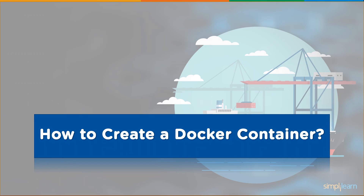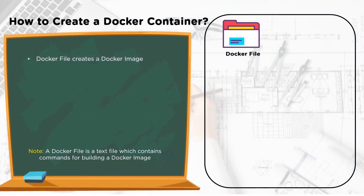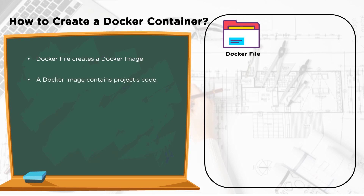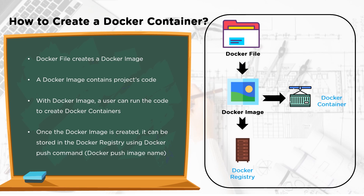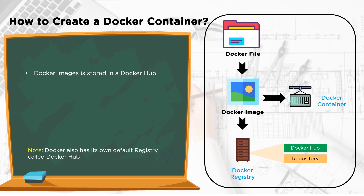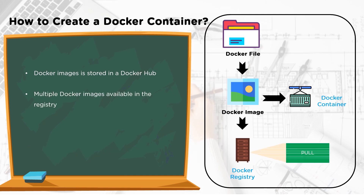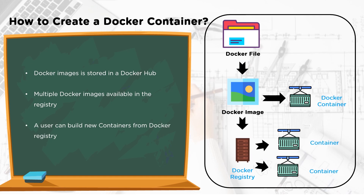To create a Docker container, first set up your development environment, then create a Docker image using a Dockerfile with the build command. The Docker image contains all the project's code needed for the application to run. Once the image is created, store it in the Docker registry using the docker push command. You can store it in Docker Hub or a repository. Multiple Docker images are available in the registry and can be retrieved through the docker pull command.